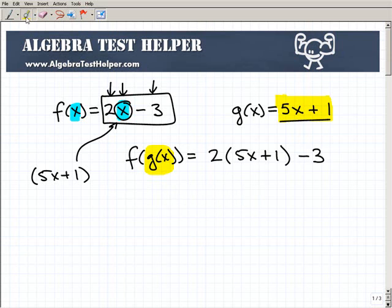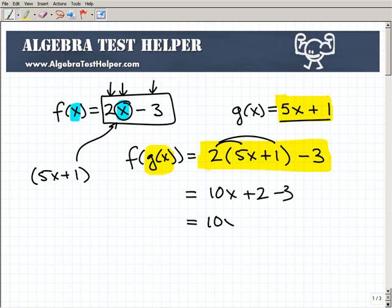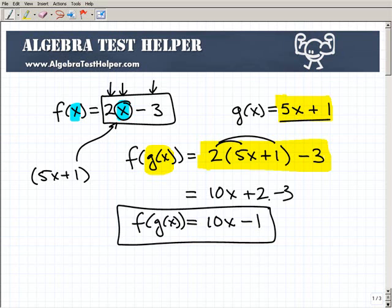And if you understand this setup right here, then you'll be home free. Because this is all simple algebra from this point forward. So let's go ahead and use the distributive property, multiply everything by 2. I get 10x plus 2 minus 3, so that'll be 10x minus 1. So f of g of x is equal to 10x minus 1. So there is our composite function, and that's how we did it. And of course, you can go g of f of x, or you can do all kinds of various combinations. But this is the basics behind evaluating a composite function.